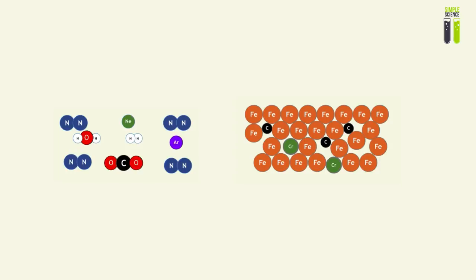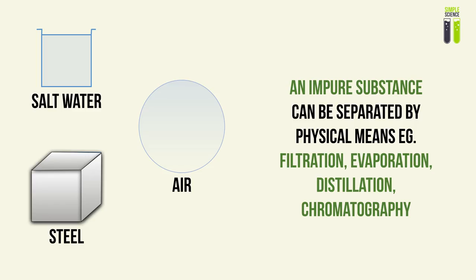Stainless steel, compared to pure iron, contains adulterating atoms like chromium and carbon. These are added for good reason — to improve the appearance of the iron structure and to improve its corrosion resistance, making stainless steel a much more viable option than pure iron in many cases. As a result of this mixture, an impure substance can be separated by physical means — we can separate the pure substances within it.